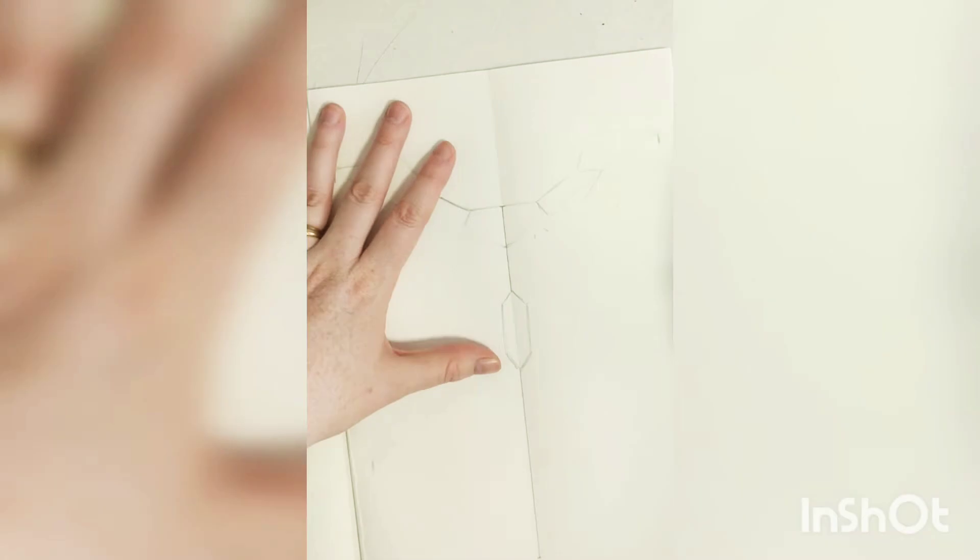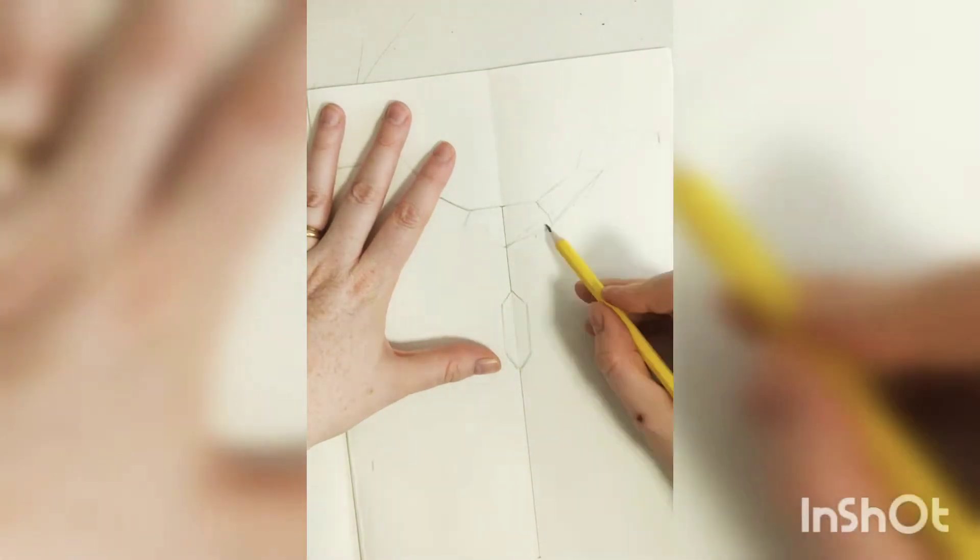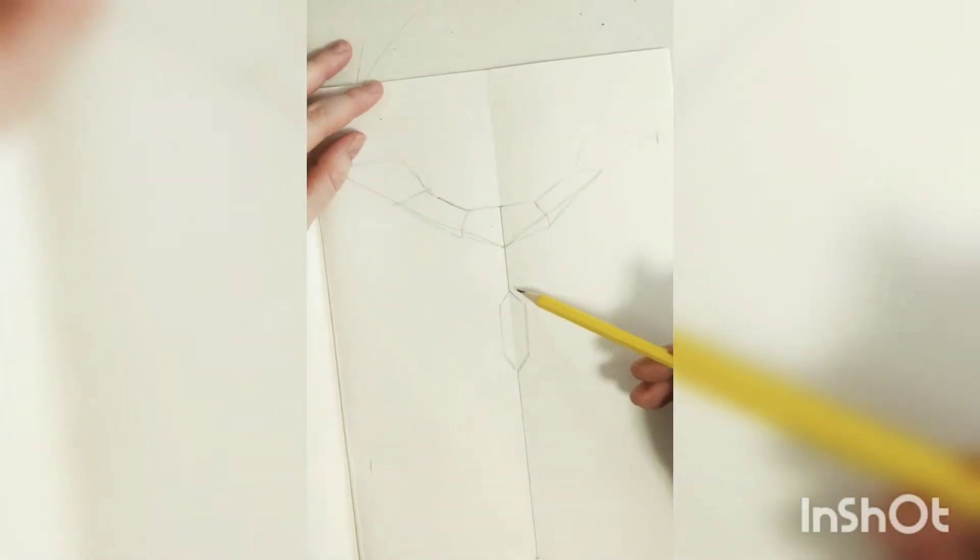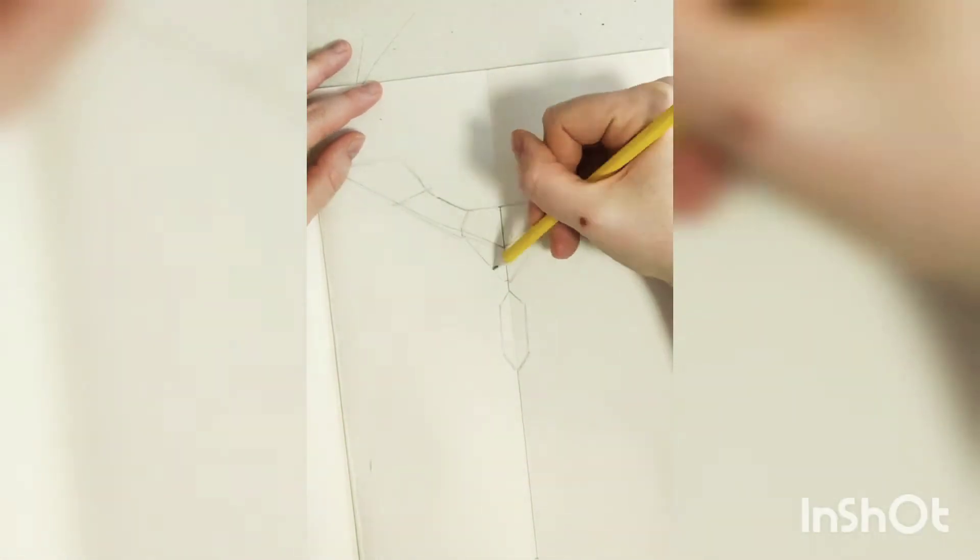And I'm trying to get the angles correct and follow the shapes that are on the drawing that I'm copying.